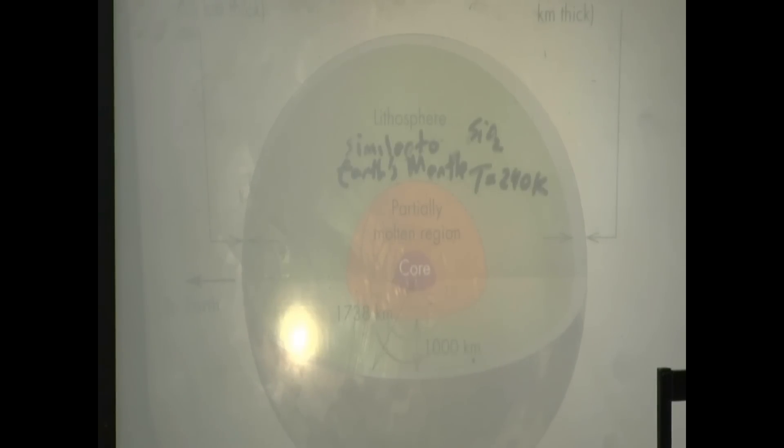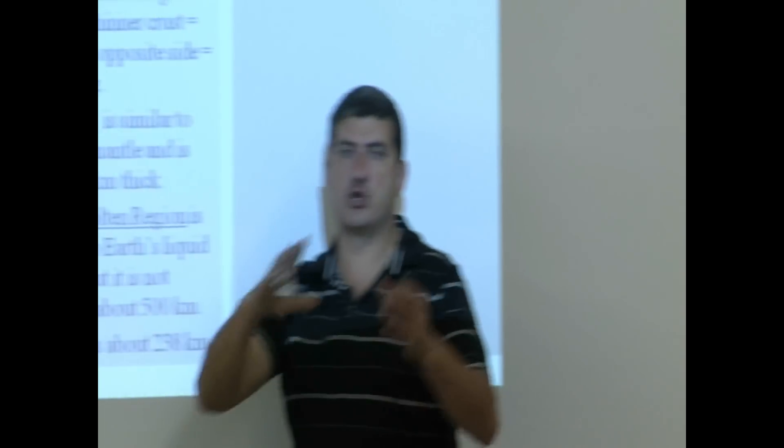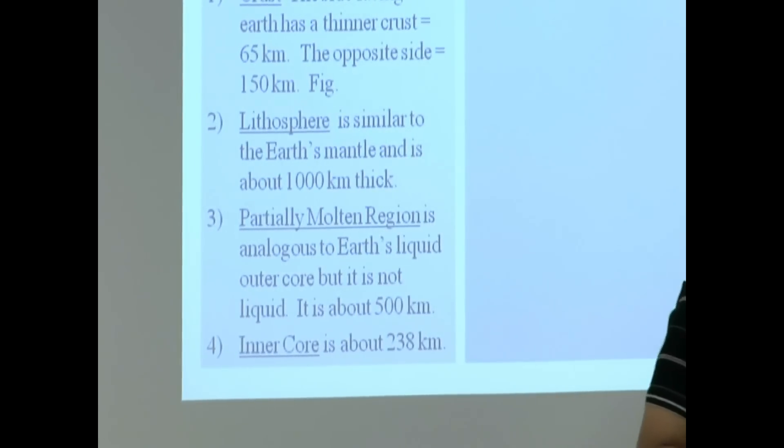And then the inner core is about 238 kilometers. When you add up all this, this guy, this guy, this guy, you should, and then the crust, you should end up equal to the radius of the moon.